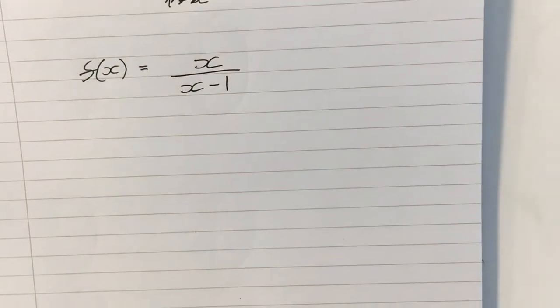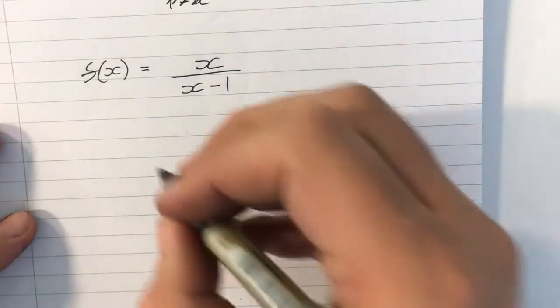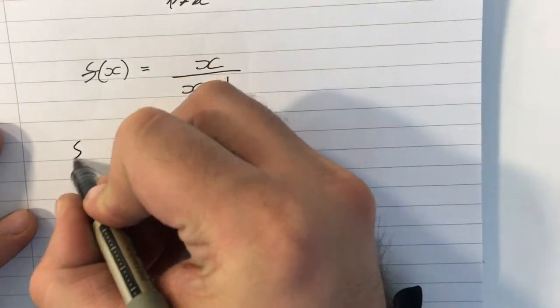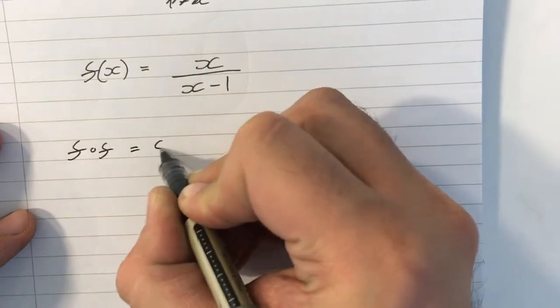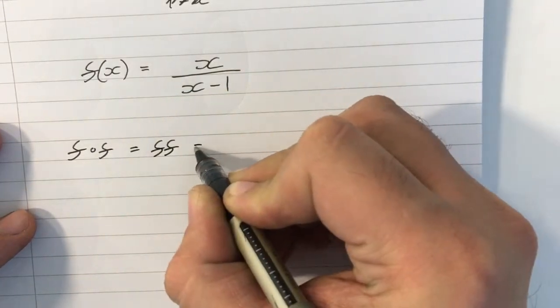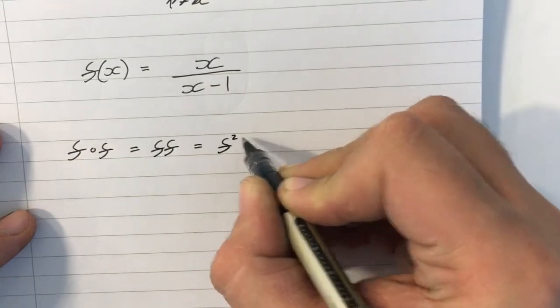Okay? So with that in mind, let's look at this function here, and let's just composite f with itself. So f composite f, which can be written as ff, which can also be written as f squared of x.